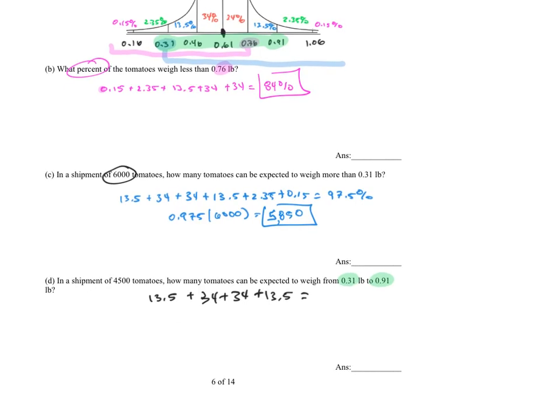Our percentages would be 13.5 plus 34 plus 34 plus 13.5. That's giving me a total of... Put that in your calculator. I'm getting 95%. Please double check my math on that again. And that's the percentage. So now we want to do the quantity. So the quantity, we're going to do it as a decimal, 0.95, times the quantity, which is 4,500 tomatoes. That's giving me a total of approximately 4,275 tomatoes, is how many tomatoes you would expect to weigh between 0.31 and 0.91 pounds.